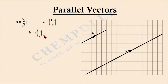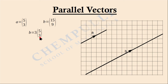Now check this column vector (5, 3). What is (5, 3)? It is vector A, because vector A is represented by (5, 3). So we can write vector B is equal to 3 times vector A.